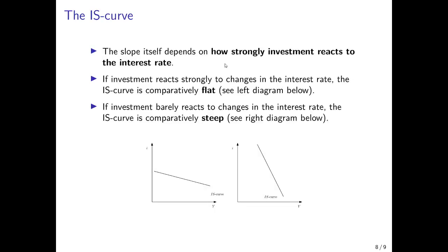The slope of the IS curve itself depends on how strongly investment reacts to the interest rate. If investment reacts quite strongly to the interest rate, the IS curve would be comparatively flat — that would be the situation depicted in the left diagram — which means that if the interest rate changes slightly, investment changes quite strongly, and therefore income and output change quite strongly. By contrast, if investment barely reacts to changes in the interest rate, we would get a comparatively steep IS curve, as in the right diagram, where a large change in the interest rate is required to induce only a small change in income and output.